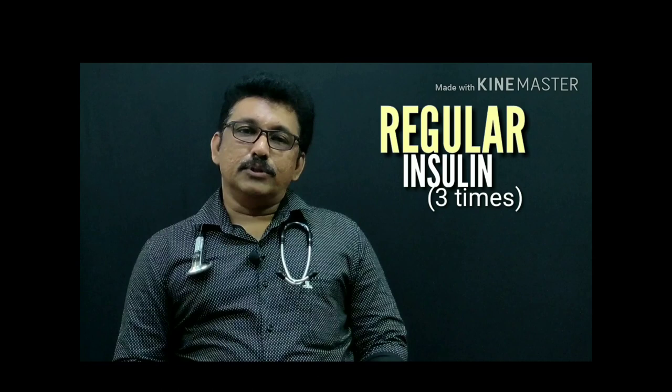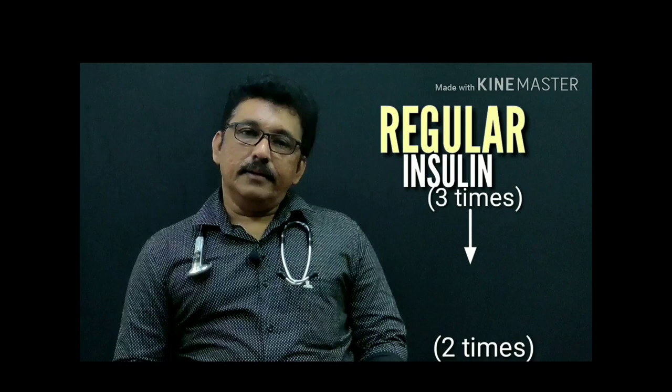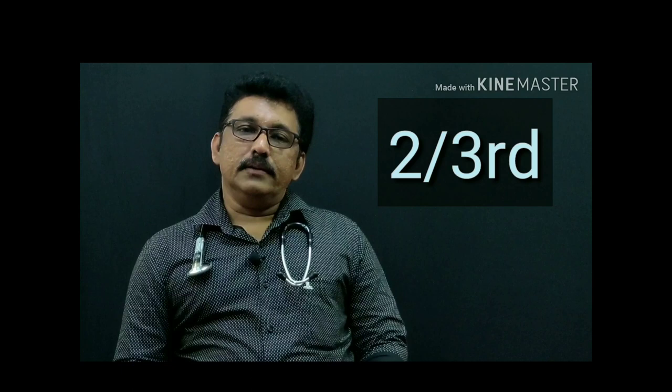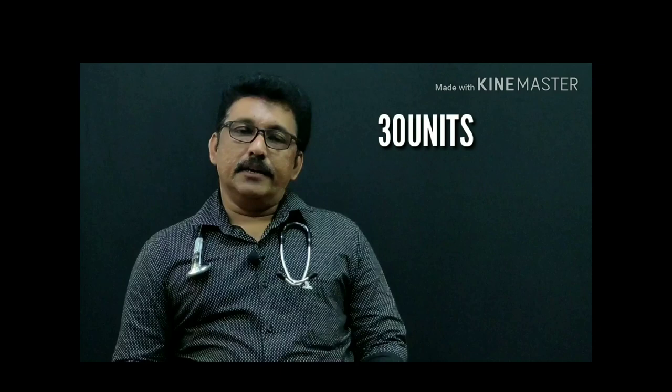As standard protocol, I am selecting 30/70 insulin for this patient on discharge. The regular insulin was given as a 3 times daily dose, and I want to switch to 2 times daily with a long-acting insulin. When converting short-acting to long-acting insulin, you take two-thirds of the previous day's total dose — so two-thirds of 90 units gives approximately 60 units.